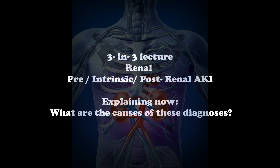In post-renal acute kidney injury, you have bilateral obstruction of urinary flow from the renal pelvis to the urethra. The obstruction can be acquired — such as benign prostatic hyperplasia — or iatrogenic, such as catheter-associated injuries. Other causes include tumors, kidney stones, or clotted blood. Remember that a unilateral ureteral obstruction with one functioning kidney will still show normal serum creatinine levels.